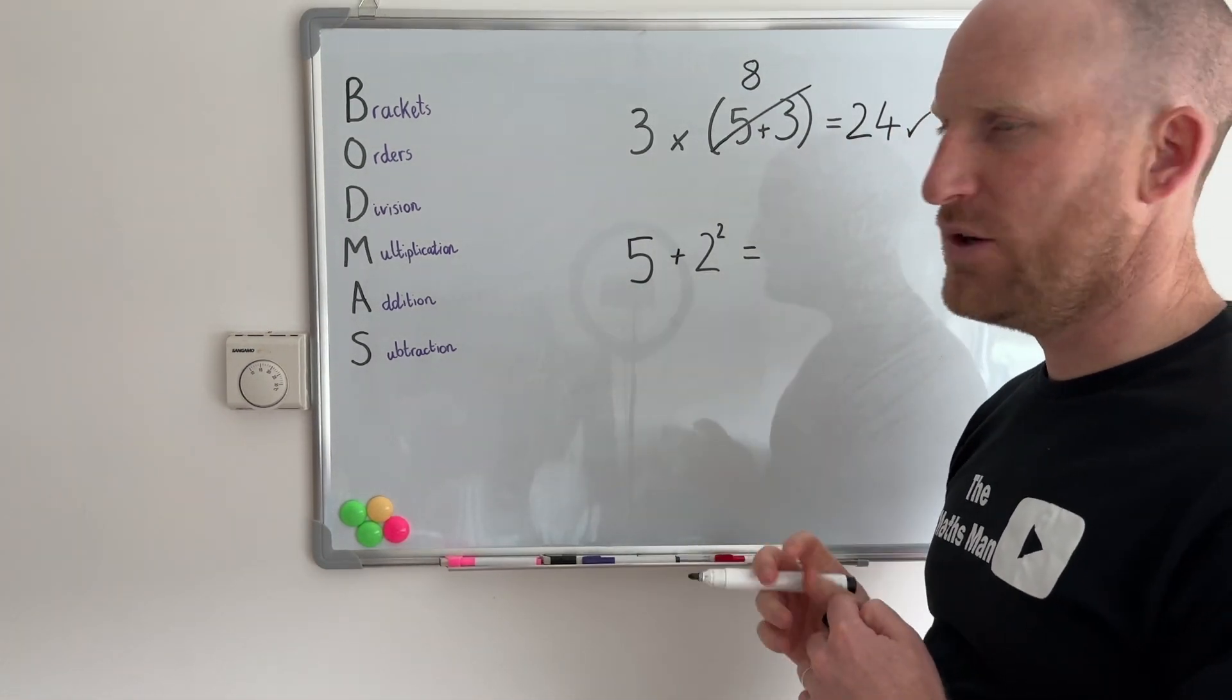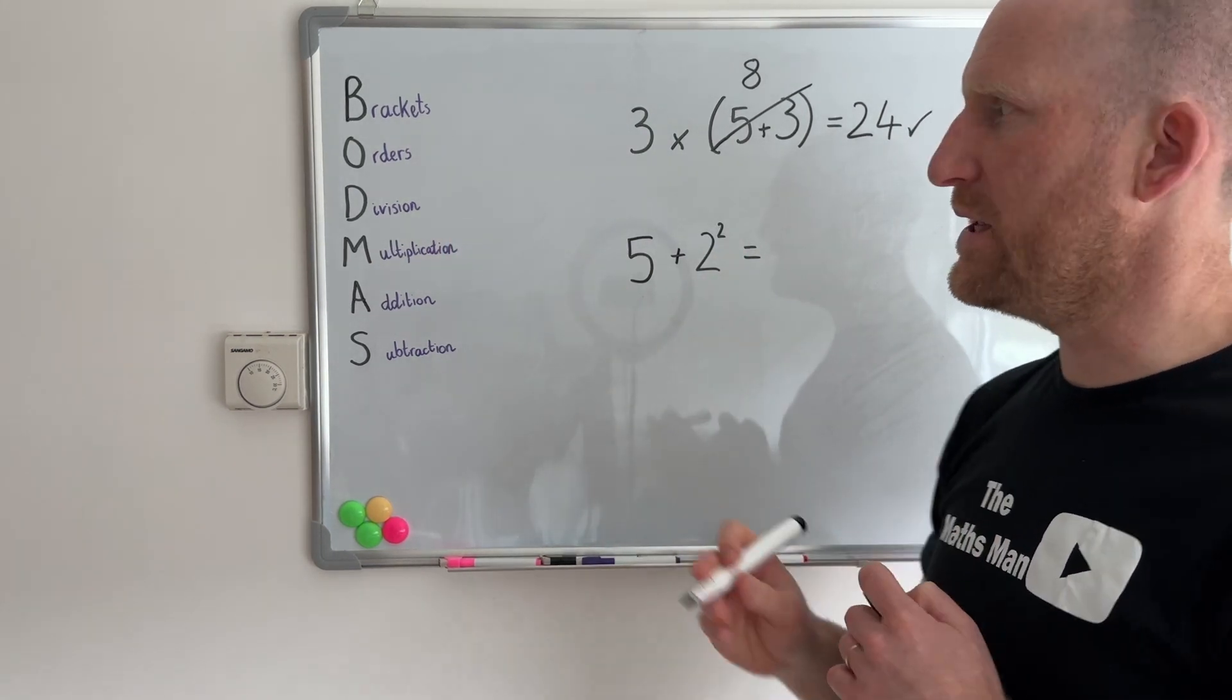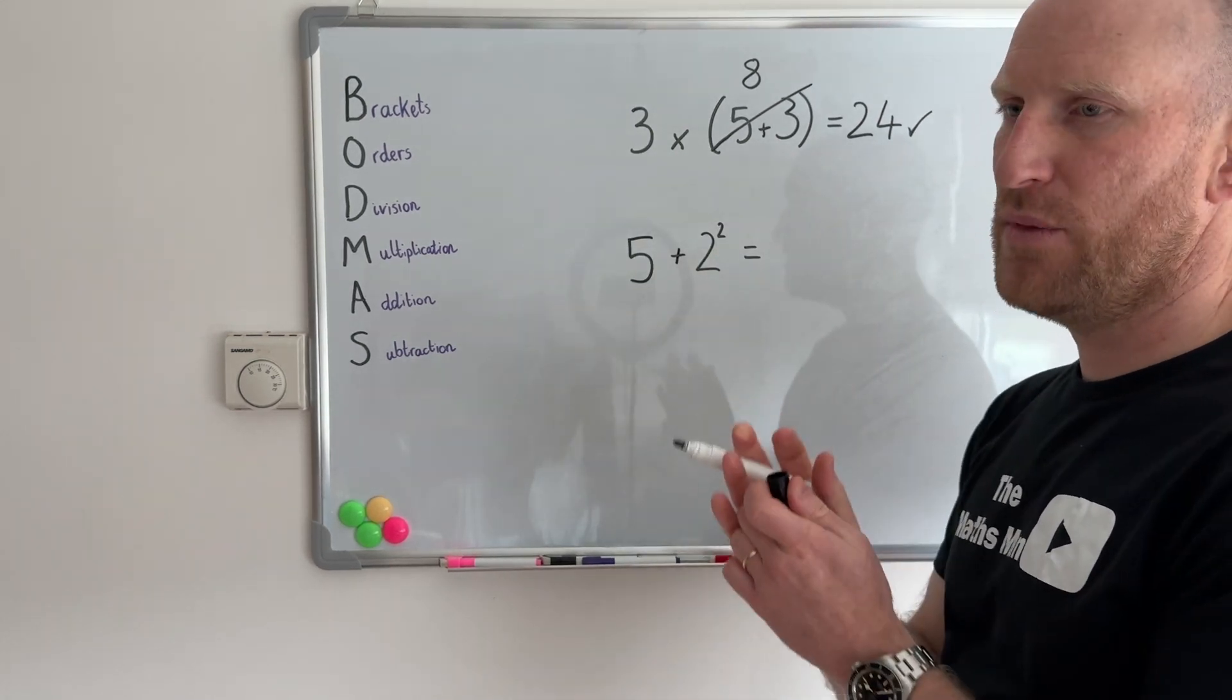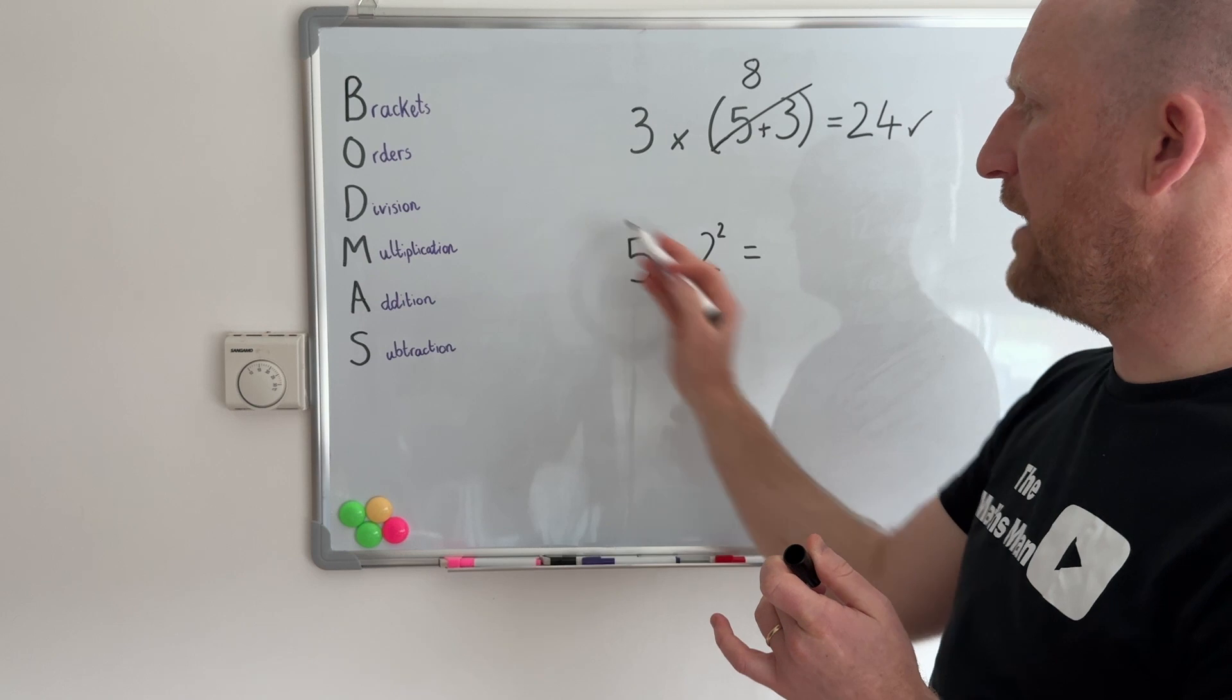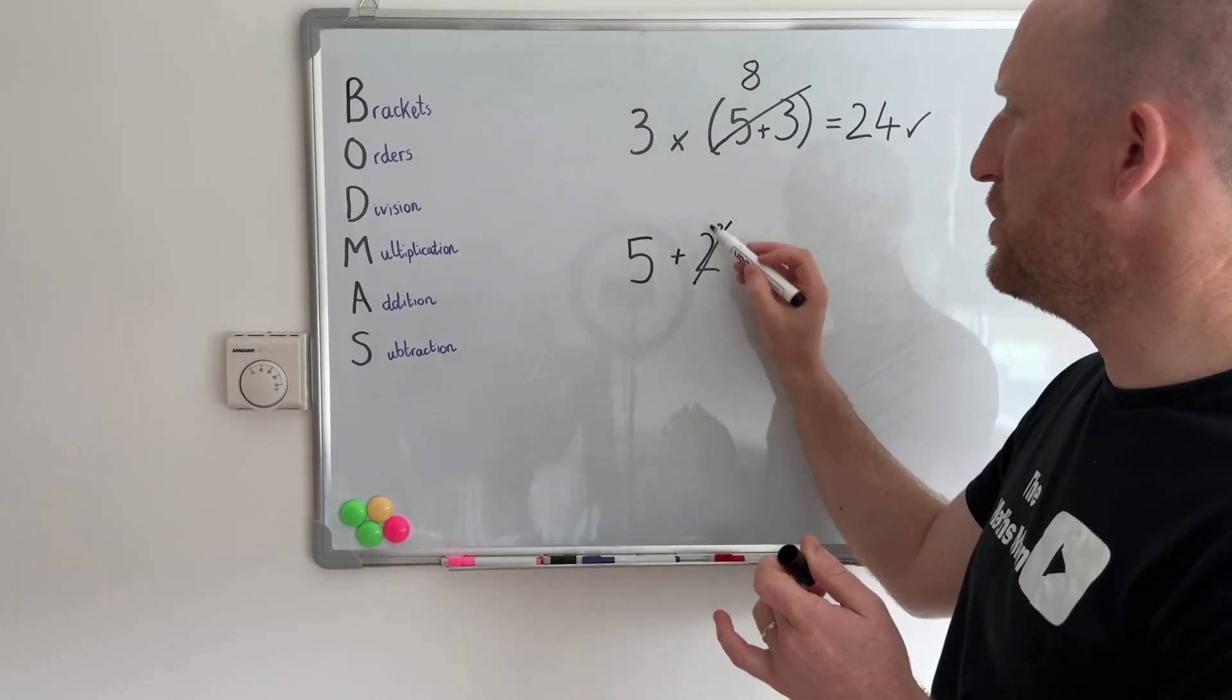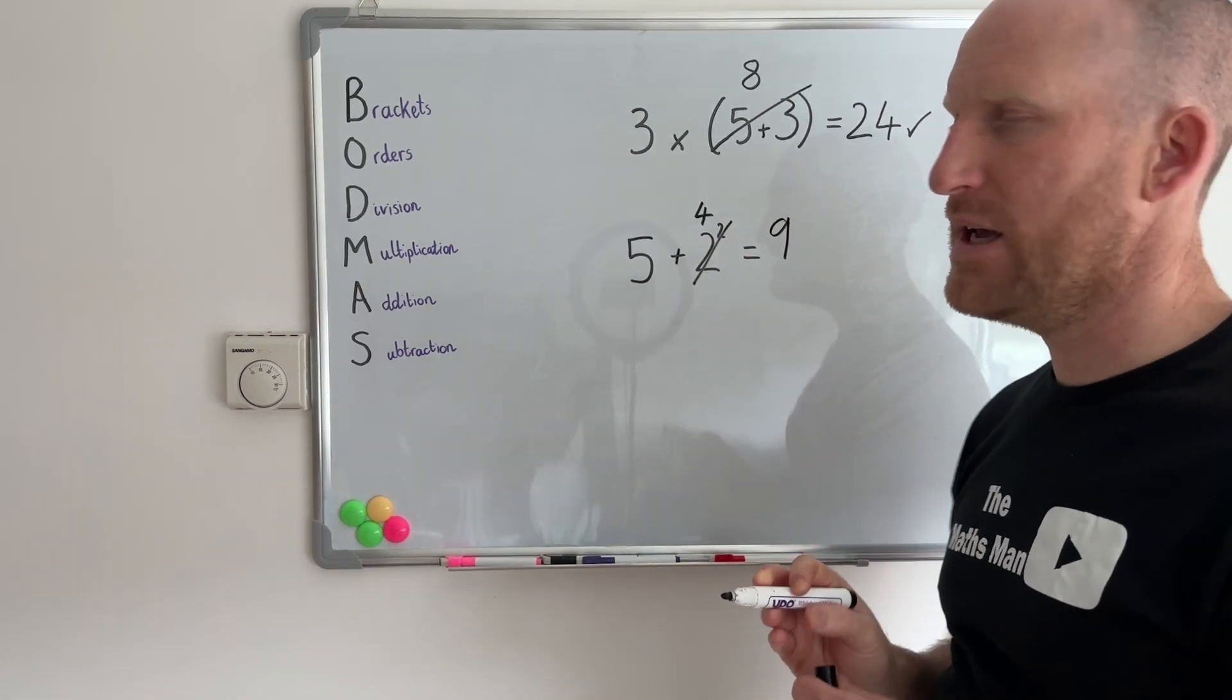Okay but this one is a little trickier so we have 5 plus 2 to the power of 2 and this is what orders mean. So it means the powers. Okay so any number that has a squared number or a cubed number anything like that. So it says that I have to do this first, so 2 to the power of 2. So 2 times 2 is 4. So then it'd be 5 plus 4 and that makes 9.